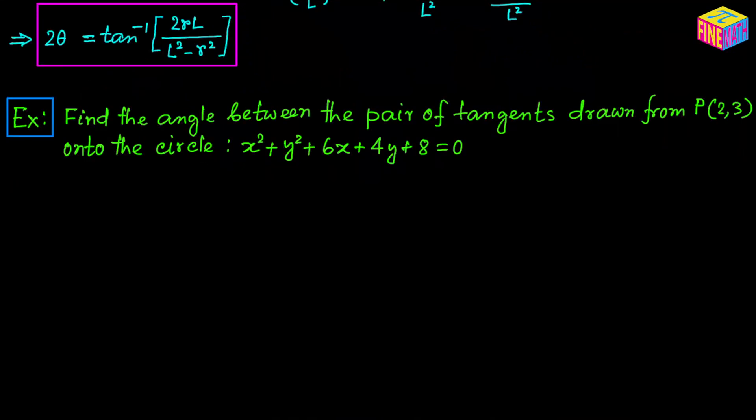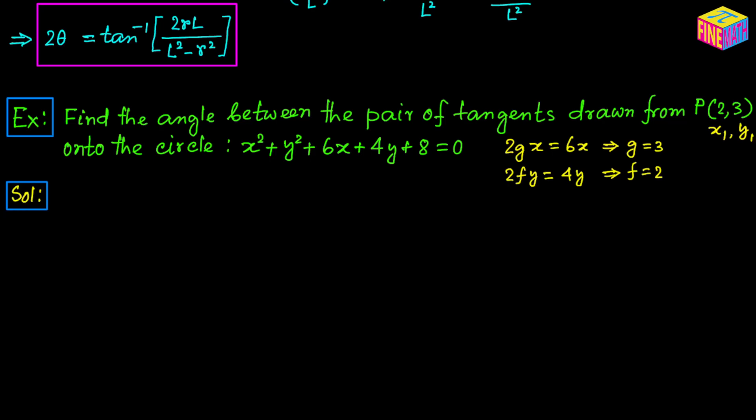Find the angle between the pair of tangents drawn from point P at (2, 3) onto the circle x² plus y² plus 6x plus 4y plus 8 equals 0. Here x₁ equals 2 and y₁ equals 3. Comparing the equation: 2Gx equals 6x gives G equals 3, and 2Fy equals 4y gives F equals 2.